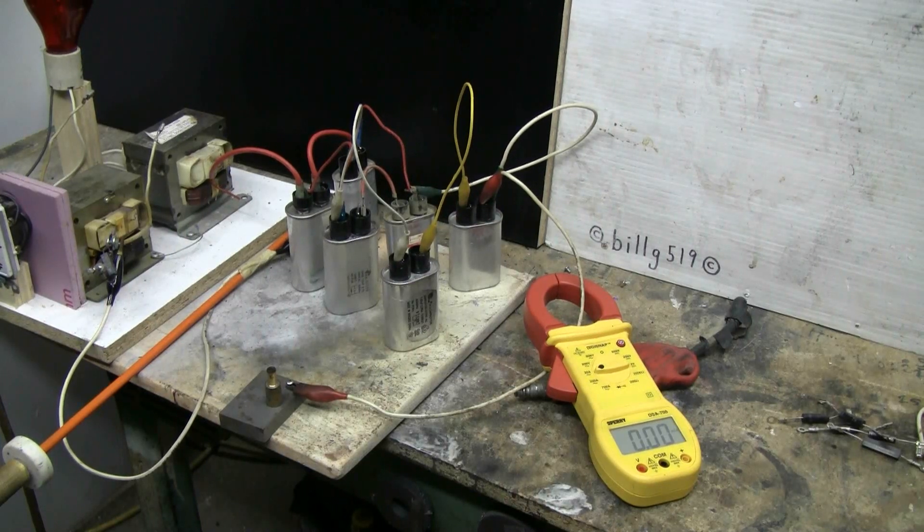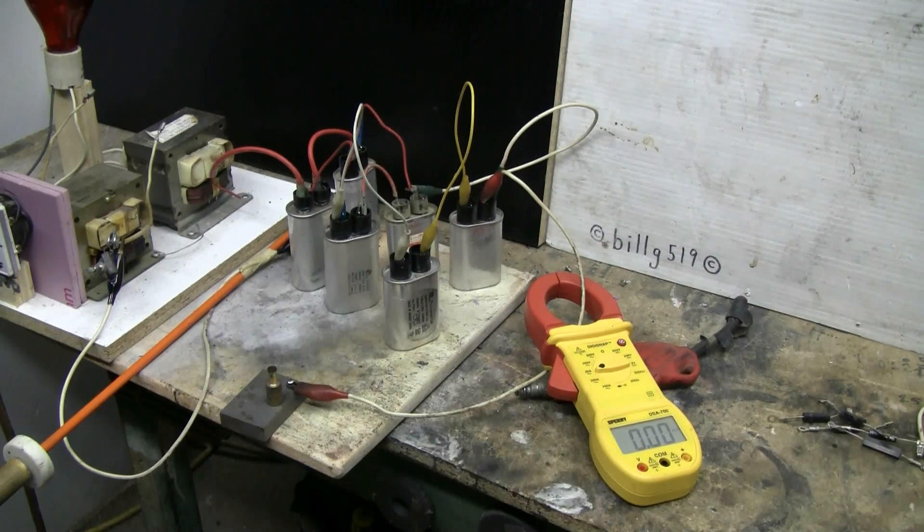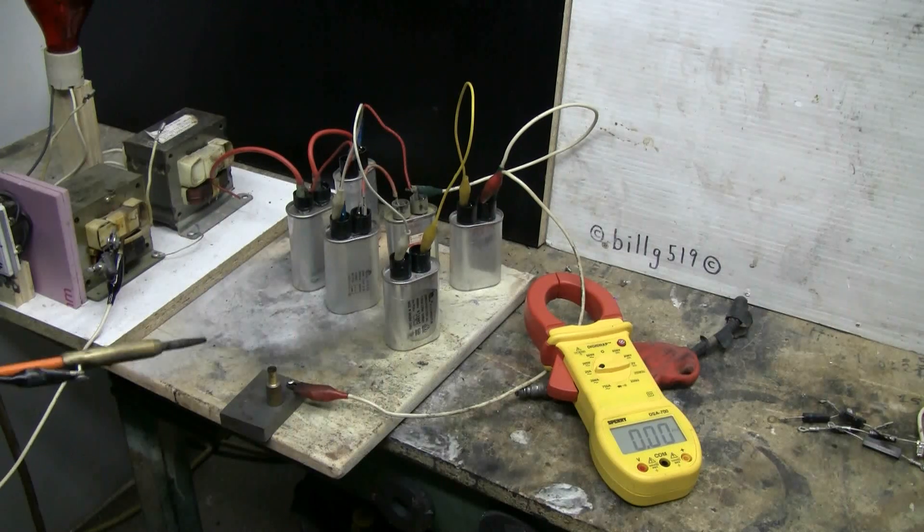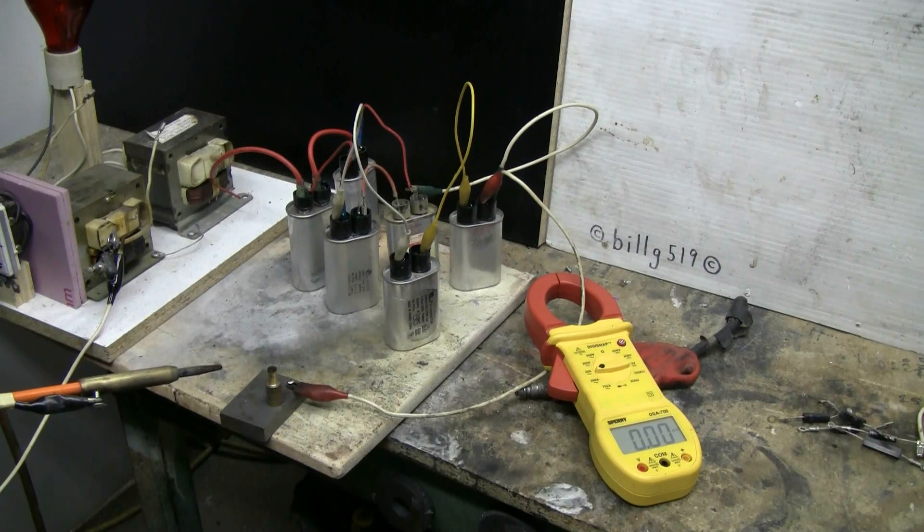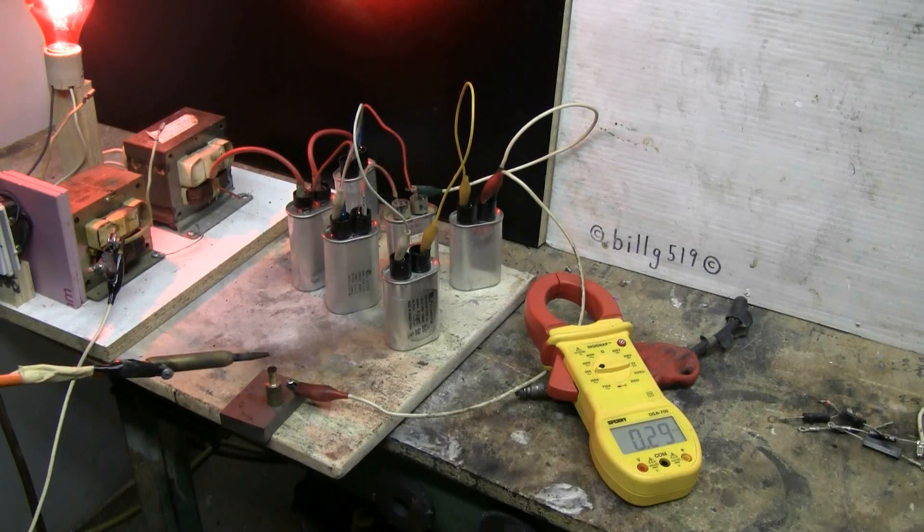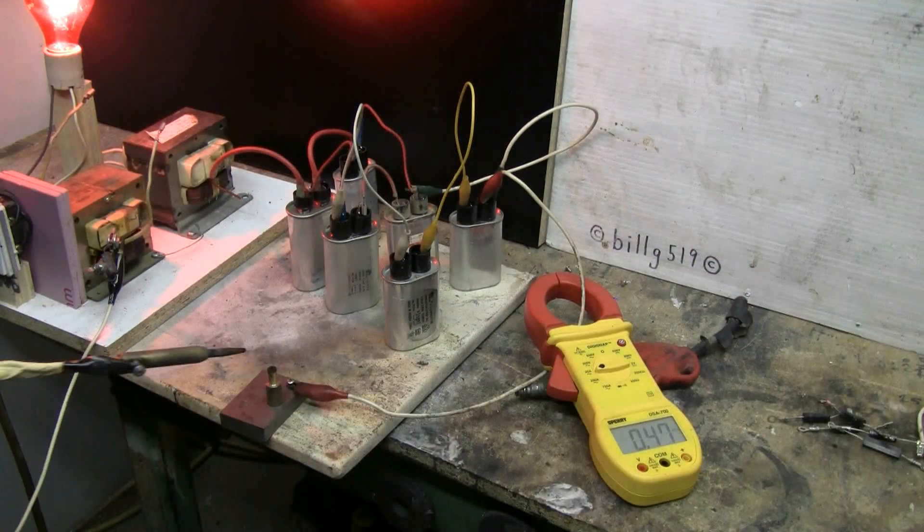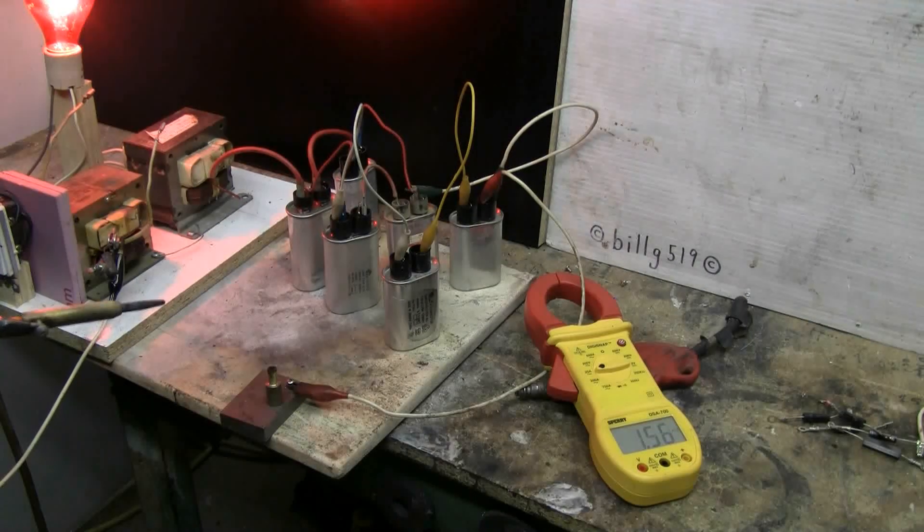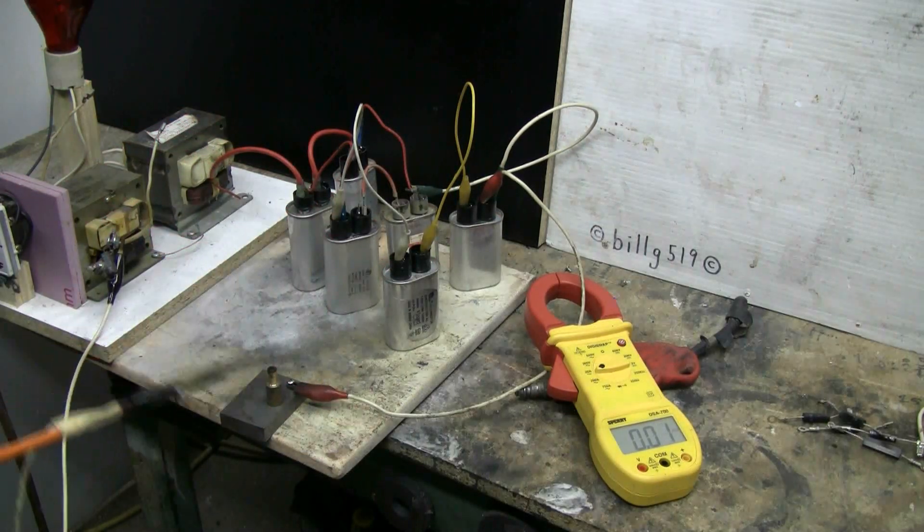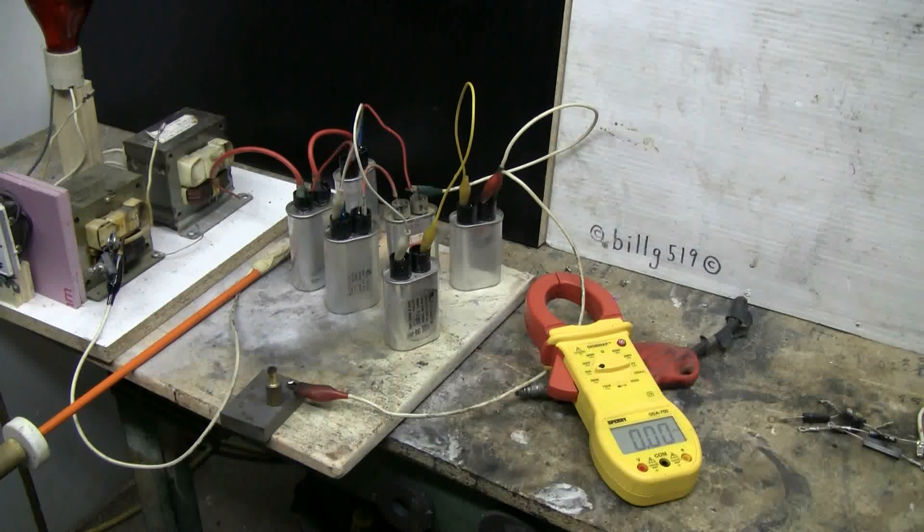This time, still with the six capacitors, I've got a clamp-on ammeter in the secondary side. It's got a fairly big screen, so it should show up in the video. Let's give the six capacitor, two MOT arcs a try again. I think I was seeing nearly 2.4 amps sometime. Interesting.